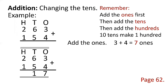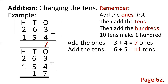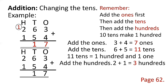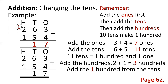Add the ones: 3 plus 4 equals 7 ones. Add the tens: 6 plus 5 equals 11 tens — bring down 1 and carry 1 to the hundreds place. 11 tens equals 1 hundred and 1 ten. Add hundreds: 2 plus 1 is 3 hundreds, plus the 1 carried from the tens, so 3 plus 1 is 4. Our answer is 417.